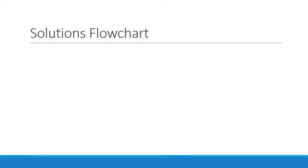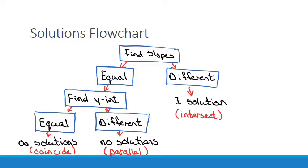I also want to look at a solutions flowchart — basically how to determine what type of system you have. The first thing you want to do is find the slopes. If they're different, right away you know it's one solution, that they intersect. If the slopes are equal, go to the tie breaker, which is the y-intercept. If the y-intercepts are also equal, there's an infinite amount of solutions — the lines coincide. If the y-intercepts are different, there are no solutions — they're parallel. The first couple times you work through examples you can use that flowchart to help you out.